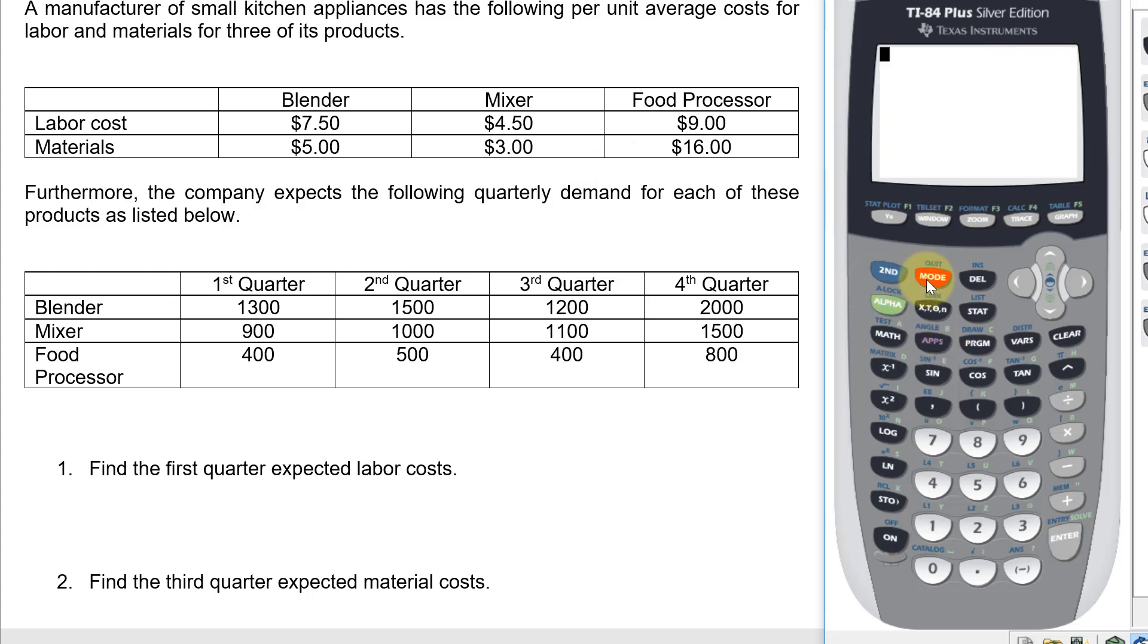Exit from the editor and go back to the matrix menu and edit matrix B. What I want to enter in now is three rows and four columns. Okay, now that I have both matrices entered in, I'm going to multiply them together.